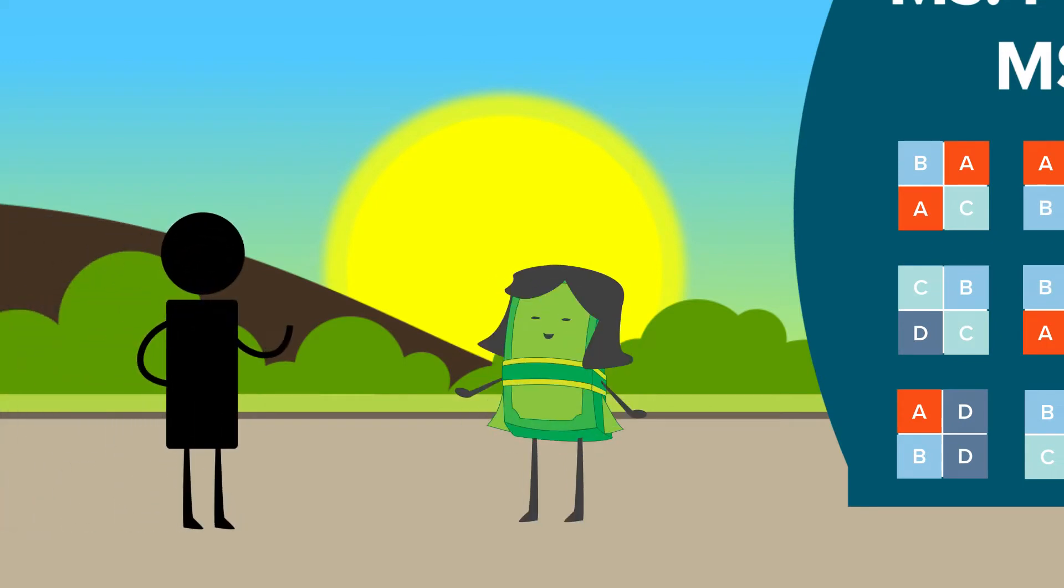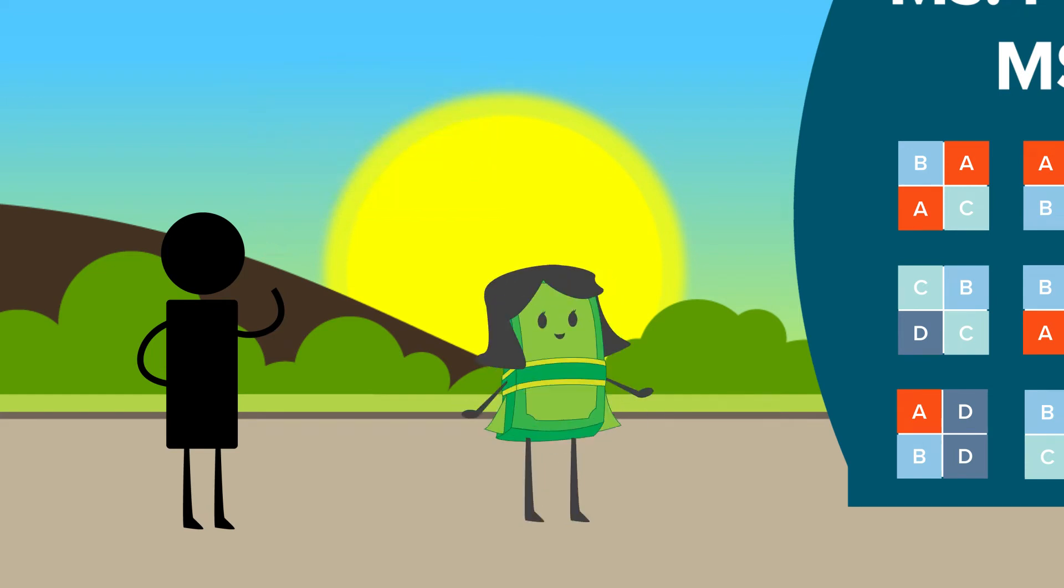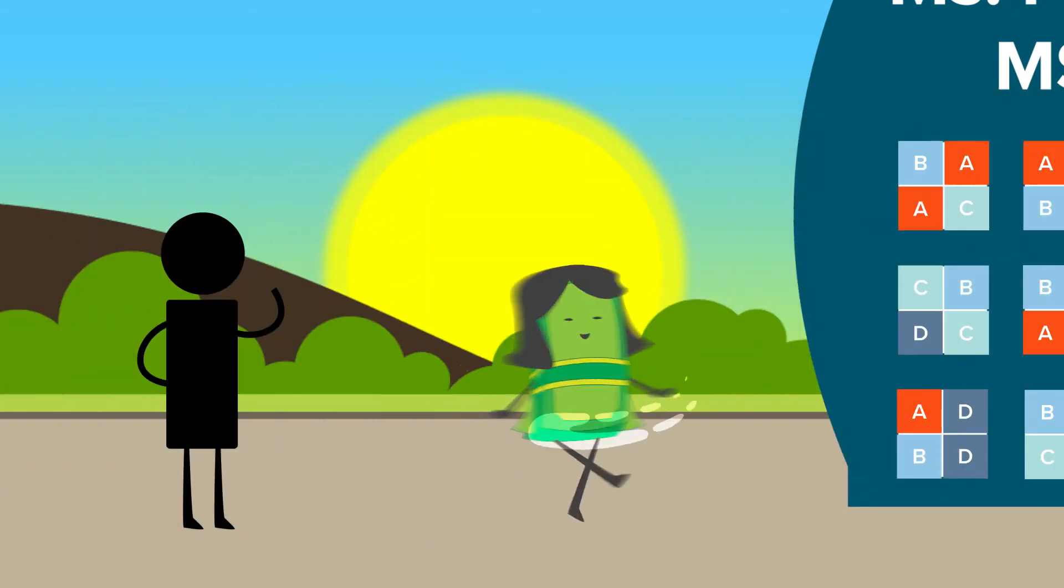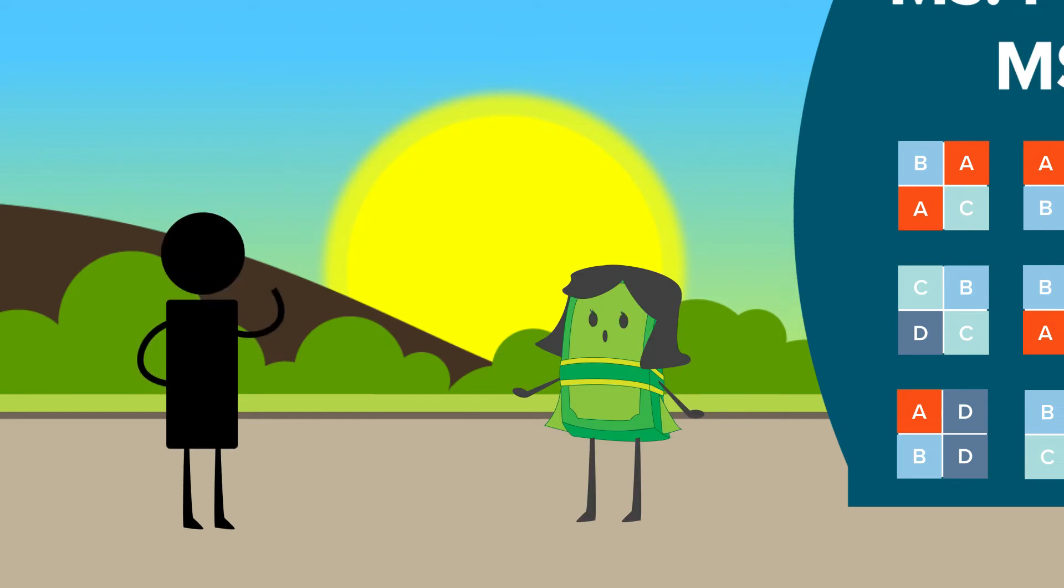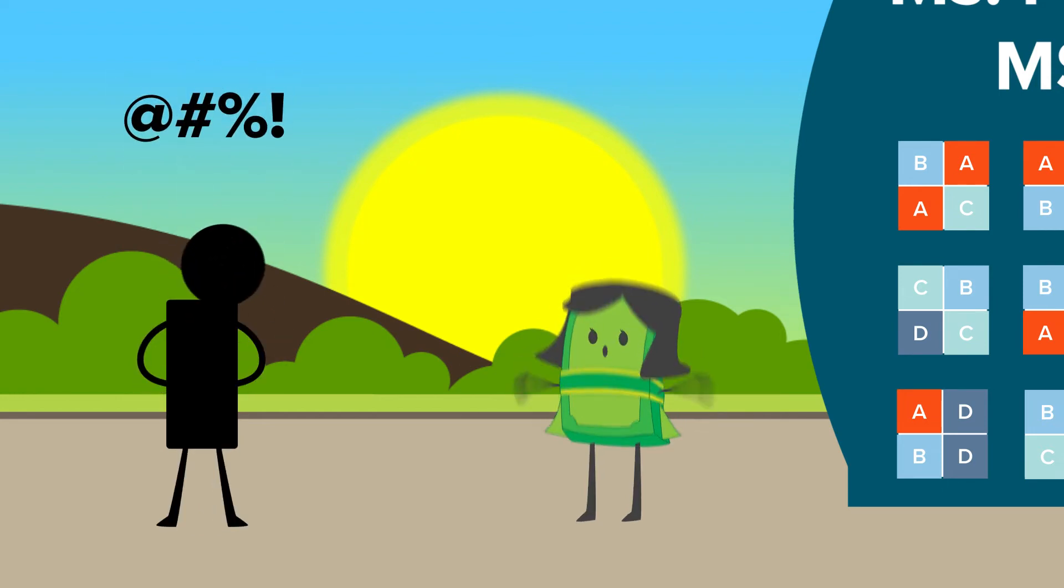Then one day, a customer had to move some of their old and rarely used data to storage. But when Miss Profit went to get the truck to move it, the truck was already in use. So her customer couldn't move their data as fast as they wanted, when they needed to.